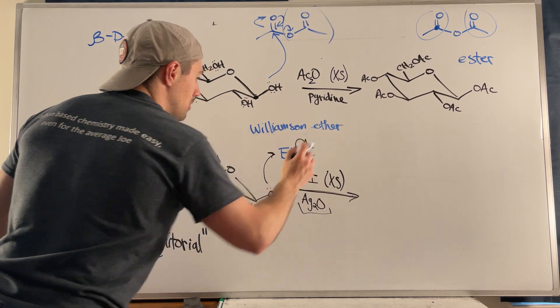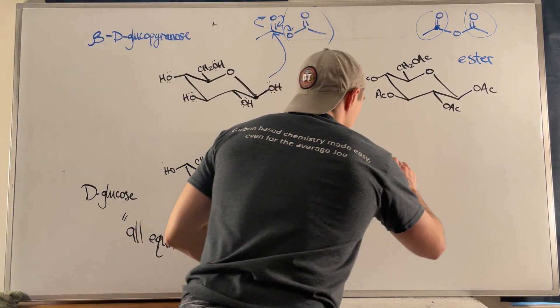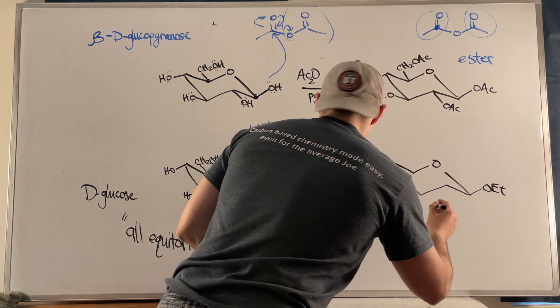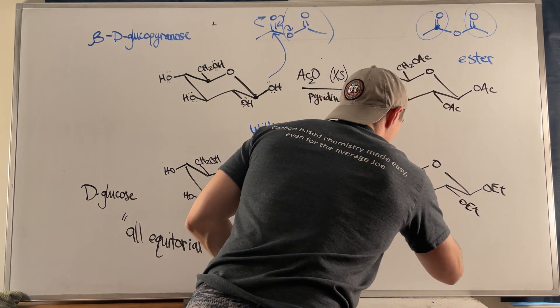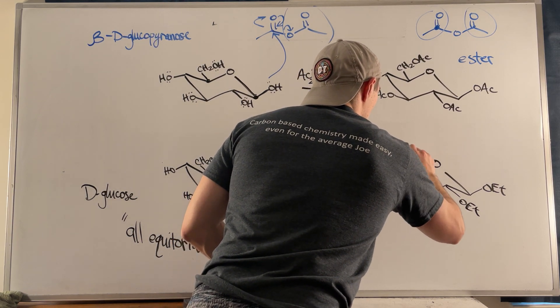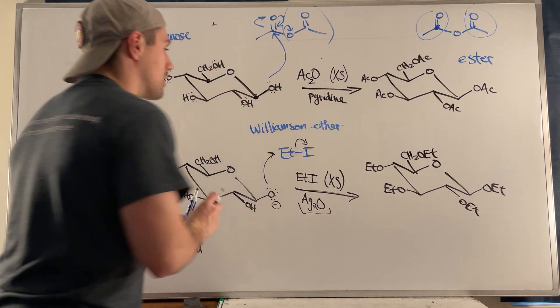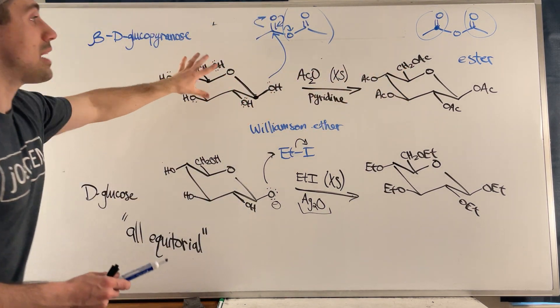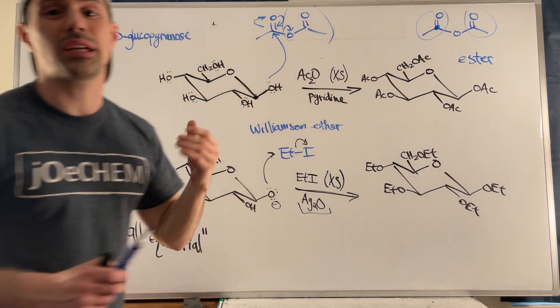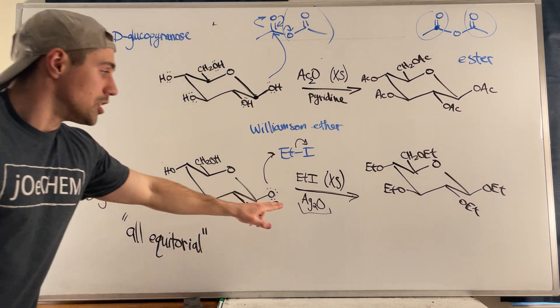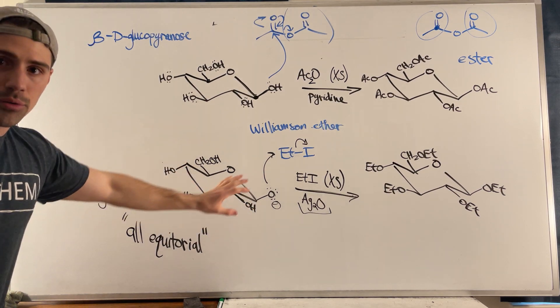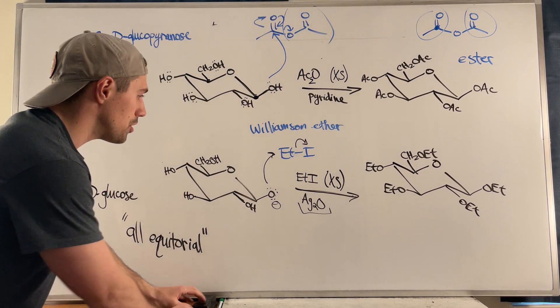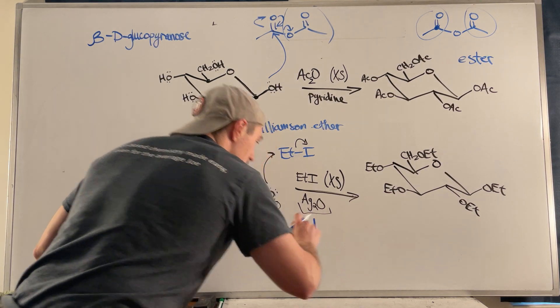We just attack right here - attack the substrate, boot the good leaving group. We have excess substrate, so you can again assume you will end up with an ether on every single oxygen in your sugar. Okay, so again like I said this is a great complete the reaction question. Or maybe you get the product and you have to provide the reactant, or maybe you get the beginning and the end and you fill in the reagents in the middle. Now like I said, you need a base to facilitate the deprotonating of these OHs when you're doing the etherization of your sugar.